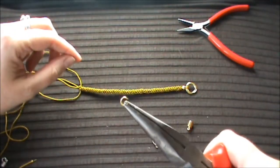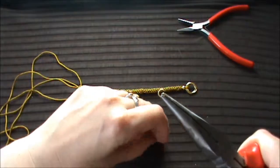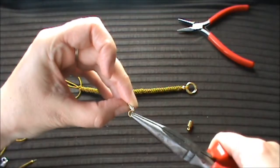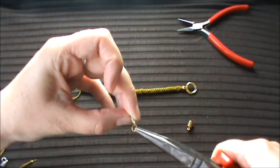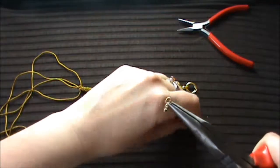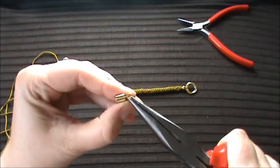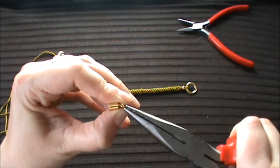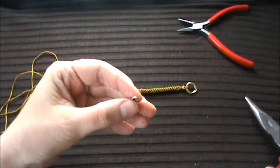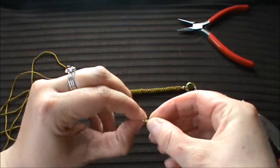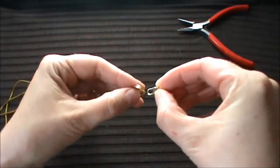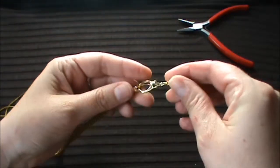For this we take the 5mm jump ring and attach it to the lobster clasp and also to the glue in barrel cord end. Close the jump ring and hook the clasp into the loop element.